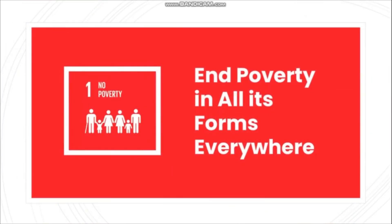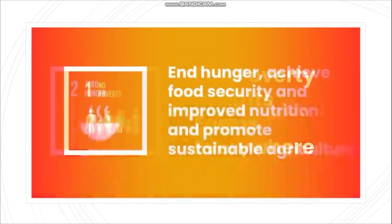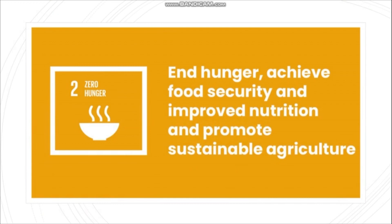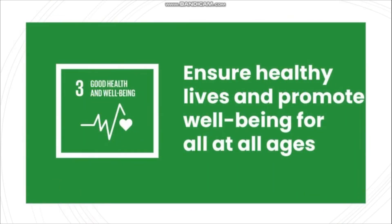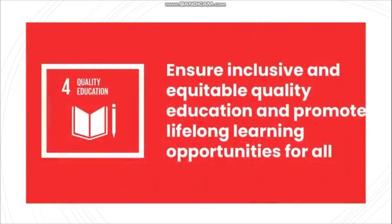First, No Poverty — end poverty in all its forms everywhere. Second, Zero Hunger — end hunger, achieve food security and improved nutrition, and promote sustainable agriculture. Third, Good Health and Wellbeing — ensure healthy lives and promote well-being for all at all ages.